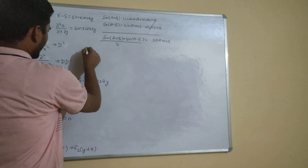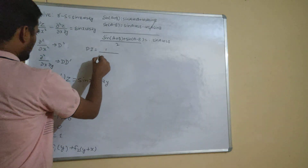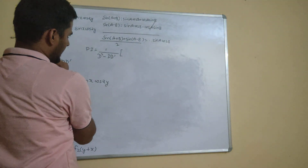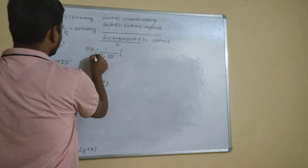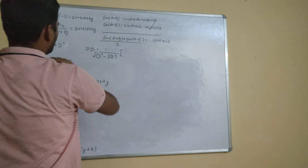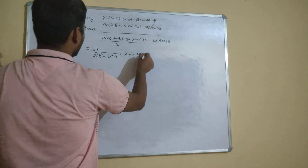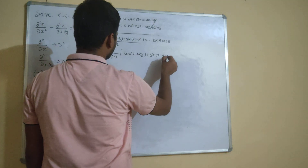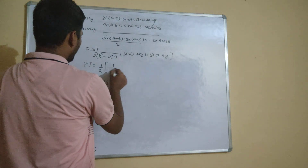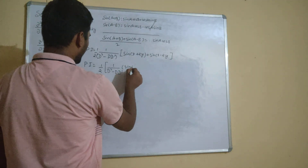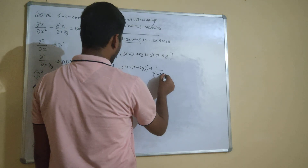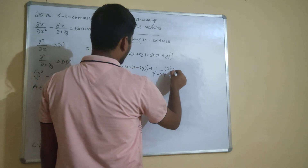For the particular integral, we write (1/(D² - D·D̄)) acting on sine x cos 2y. Taking half outside, with a = x and b = 2y, this becomes (1/2) times [(1/(D² - D·D̄)) acting on sin(x+2y)] plus [(1/(D² - D·D̄)) acting on sin(x-2y)]. These are two separate problems.